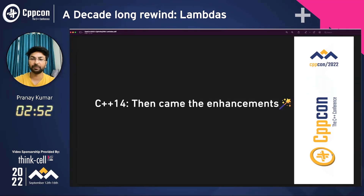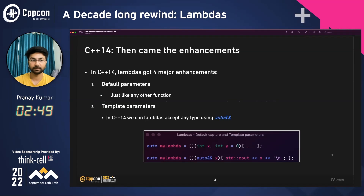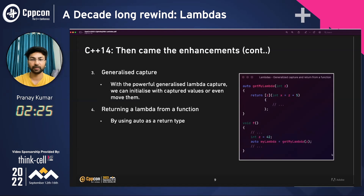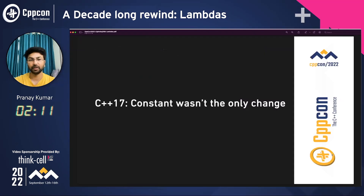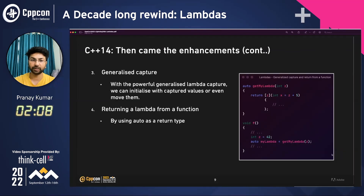Then came C++14, and there were major enhancements. Lambdas got four major improvements. First was the introduction of default parameters — just like any other function, lambdas could be supplied default parameters. Second was template parameterization: you could use lambdas with auto, so they could be called and used like a template function. Third was generalized capture — you could initialize variables using existing values, and even move existing values into the capture list. Fourth, you could return a lambda from a function itself by using auto as a return type.